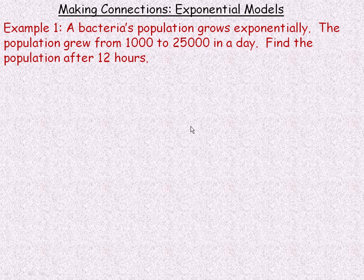We're told that a bacteria population grows exponentially, so we can use an exponential model. The population grew from 1,000 to 25,000 in a day, and we're asked to find the population after 12 hours. Because it's exponential growth, you can't just average the 1,000 and 25,000 — that doesn't work because it's not linear growth, it's exponential.